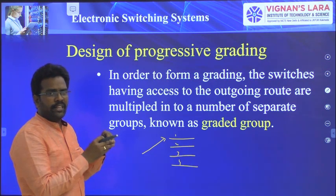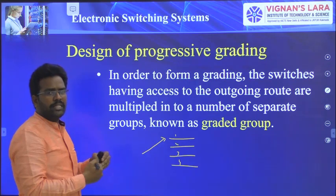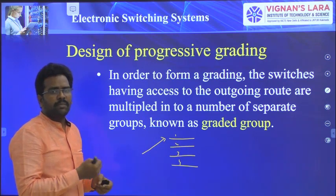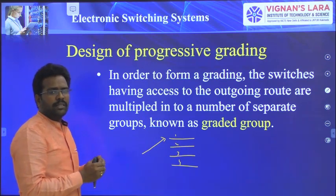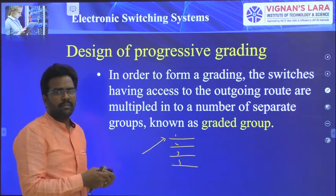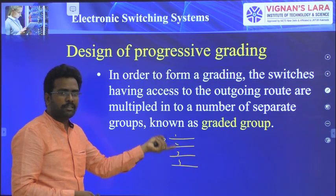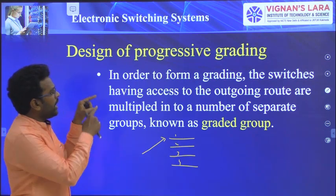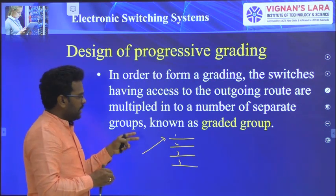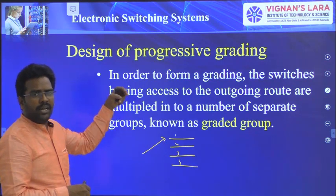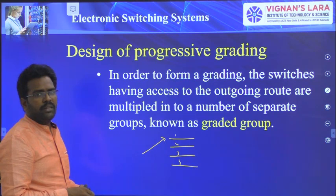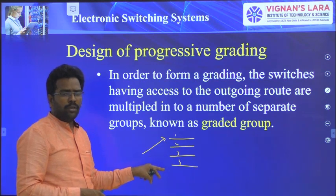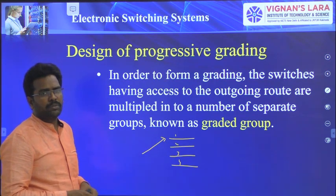Because of the sequential selection, the first 6 trunks are having the highest choice compared to the last 4 trunks. But in some scenarios where the switch can select outlets randomly, you cannot apply this principle. In progressive grading, we assume that this selector switch is going to choose the outlets in a sequential manner. That is the reason why we are making the last 4 low usage trunks common for both the groups.